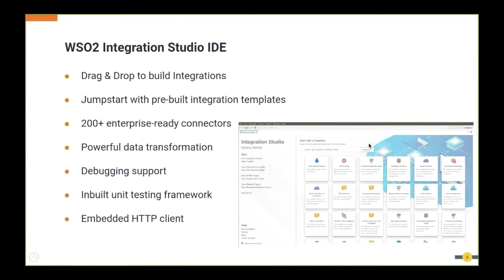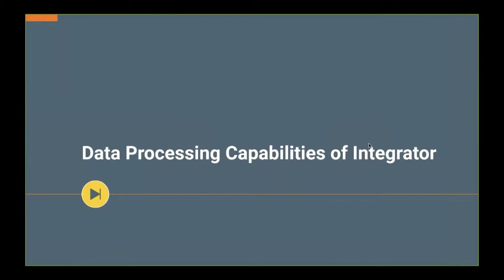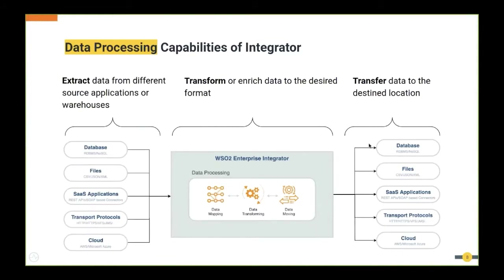Now let's look at the data processing capabilities of the integrator. In any real-world application, we need to extract data, do something with it, and transfer it to a desired location. Enterprise Integrator can extract data from different sources — databases, files, SaaS applications, or different transport protocols. For example, if you have data in a JMS queue, you can fetch it, do some processing, and send it wherever you want.